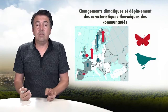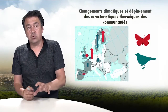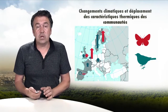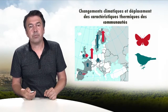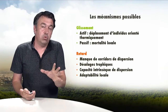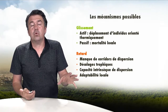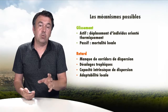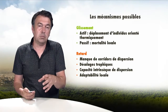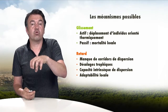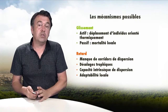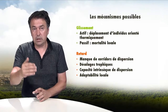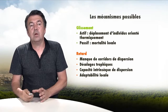The northward shift is much stronger in northern Europe than in the south, and there are also differences between taxonomic groups: birds and butterflies do not move at the same speed, which will likely cause major disruptions in trophic chains. This shift can be active — through the dispersal of thermally oriented individuals moving towards cooler climates in the north — or passive, where the average index increases simply because there are fewer individuals of cold-loving species at the local level.